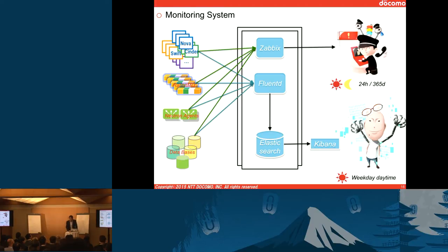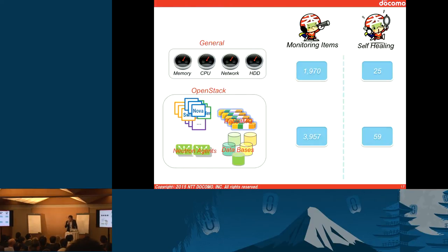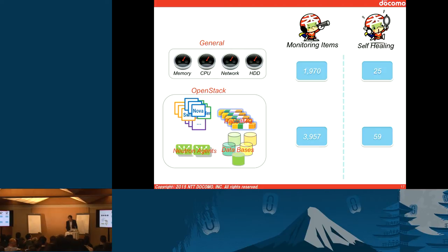Let me talk about Zabbix configuration. Right now, we are monitoring about 2,000 items — that is for general stuff like memory, CPU, network, and hard disk usage. We also have a simple self-healing mechanism like process restart. As for OpenStack, we have about 4,000 items we are monitoring, and about 65 self-healing mechanisms have already been deployed.